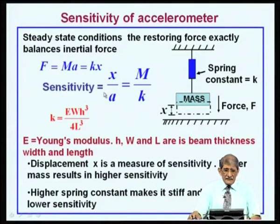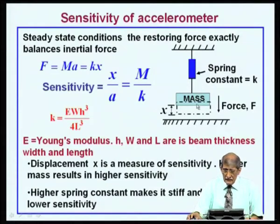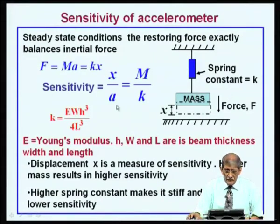We have already defined sensitivity. To reiterate: the accelerometer consists of a spring-mass combination. When the mass experiences a force in a direction, it moves by a distance x. The restoring force exerted by the spring is k times x, and the force experienced by the mass is mass times acceleration. k is the spring constant, which depends upon the dimensions of the spring being used.